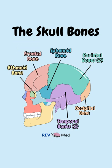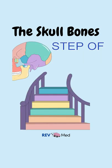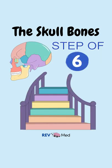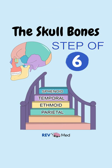We'll remember these bones by the mnemonic STEP OF six. S for sphenoid bone, T for temporal bone, E for ethmoid bone, P for parietal bone, O for the occipital bone, and F for the frontal bone.